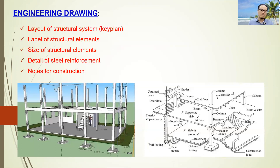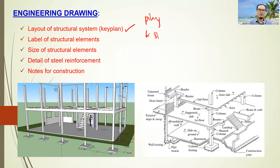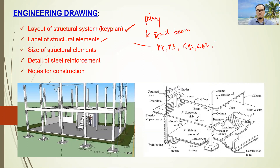The engineering drawing, as mentioned before, will provide the layout of the structural system, named the key plan — such as the layout of piling and ground beam. It also shows the level of structural elements such as P4, P3, and for ground beams: GB1, GB2, GB3, and so on. It presents the size of structural elements, the detail of steel reinforcement, as well as providing notes for construction.